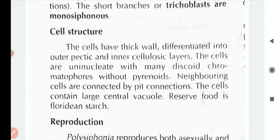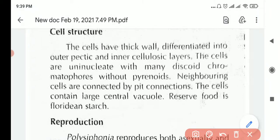The cells have thick walls and are differentiated into outer pectic and inner cellulosic layers. Since it is an algae, they photosynthesize like plants, so they have cellulose. But they also have the hard structure called pectin because they have a very hard thick wall, so they can bear the ocean currents. They prefer to live in the littoral zone or the sub-littoral where waves keep crashing, so they need a strong wall.